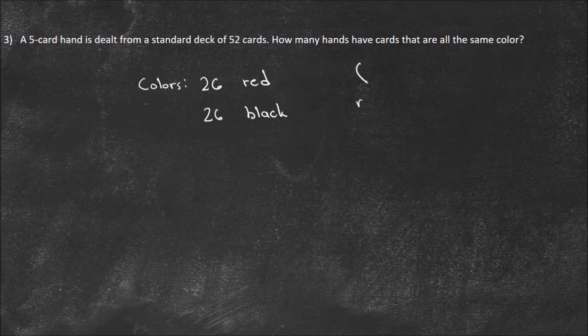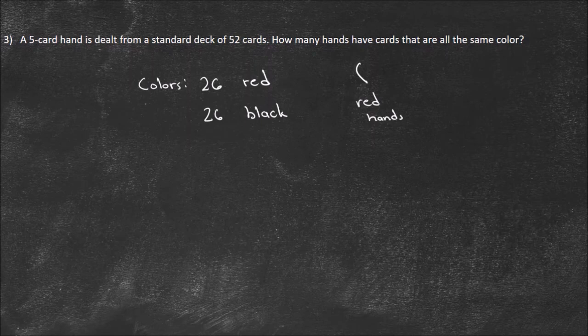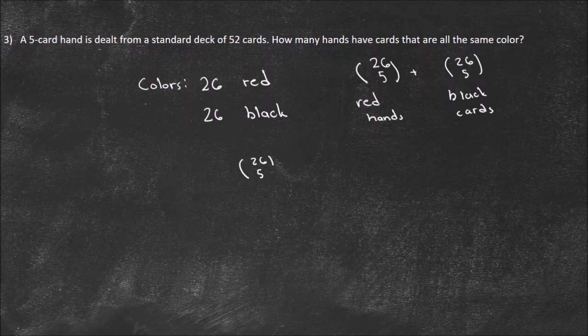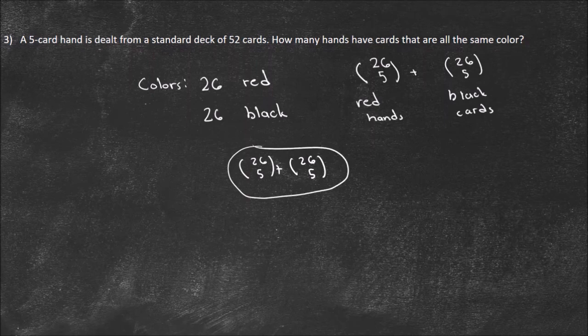I want to know how many 5-card hands have cards that are all the same color. For red hands, the formula is 26 choose 5, because there are 26 cards to choose from and I need to take 5. For black hands, it's also 26 choose 5. So the total is 26 choose 5 plus 26 choose 5. You could simplify it, but I wouldn't recommend it — most tests would accept this as the answer for the number of same-color hands.